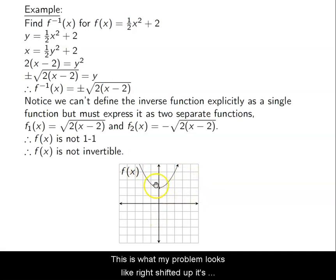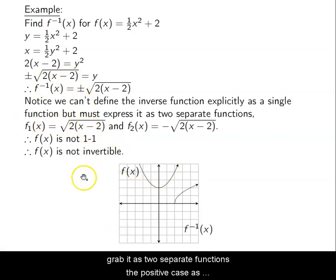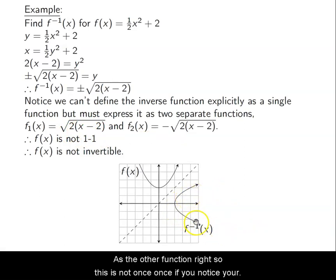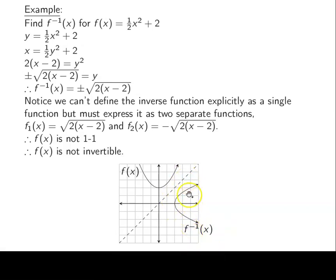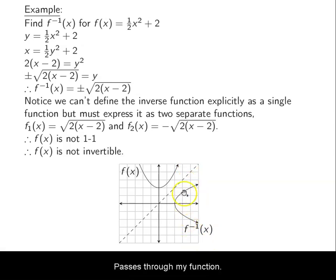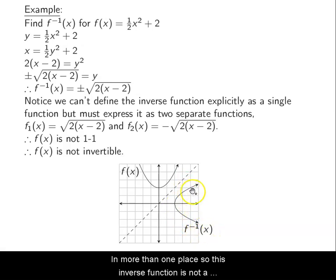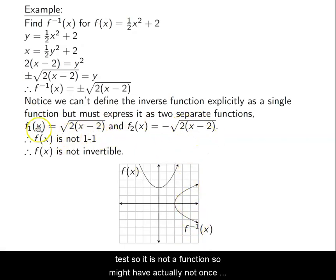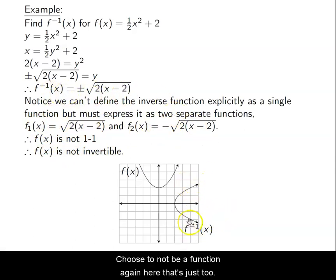If we graph this parabola — shifted up, slightly wider than normal — to graph what would be the inverse, I'd have to graph two separate functions: the positive case as one function and the negative case as the other. The inverse does not pass the vertical line test, so it is not a function. Therefore f(x) is not one-to-one, not invertible, and what we found for the inverse is not a function.